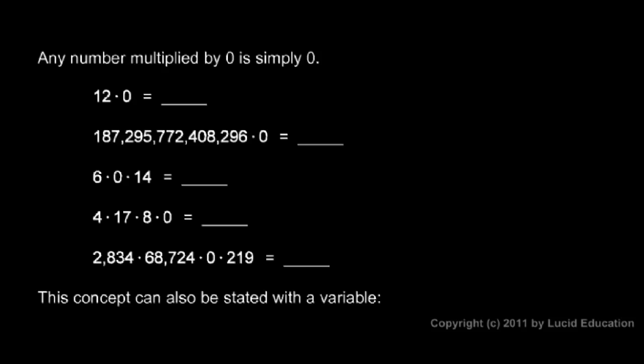Any number multiplied by 0 is 0. That's true for any number. So 12 times 0 is 0. This huge number here, 187,295,772,408,296 - the point is it doesn't matter what that number is or that it's huge. If we multiply it by 0, we end up with 0.